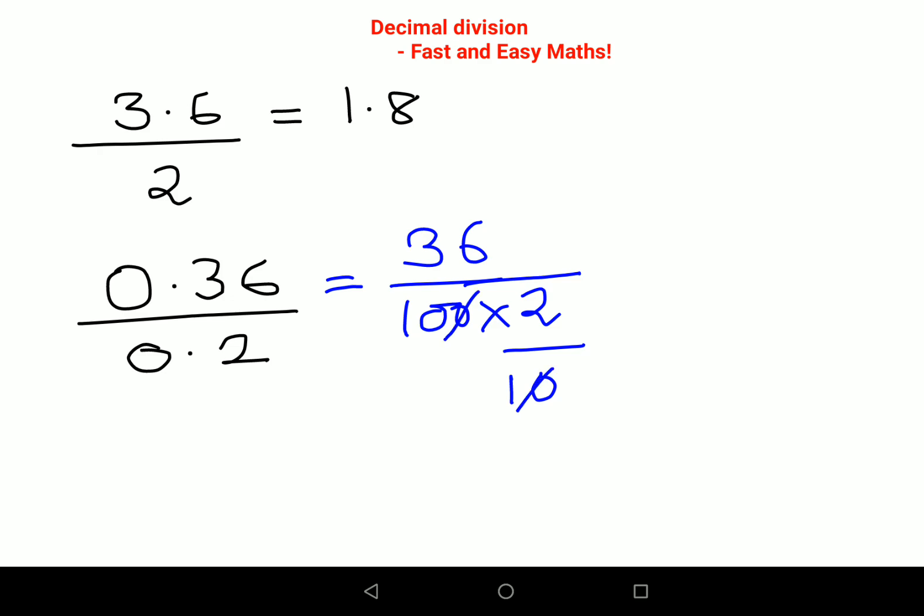Now here all you have to do is just cancel the zeros. Please understand, don't make the mistake of cancelling 36 and 10 making the 10 as 5, because dividing any number by 5 becomes difficult. It is always easier to divide any number by 10. So now this is 2 and this is 18, so you get the answer as 18 upon 10. So final answer is 1.8.